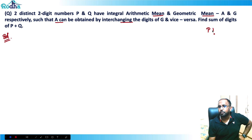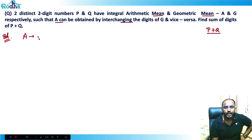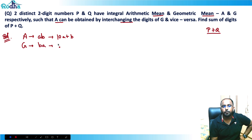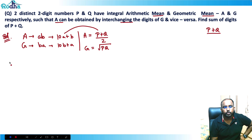Let's start with A, the arithmetic mean. Let's say A is the two-digit number represented as 'ab', so A equals 10a plus b. Since A and G are obtained by interchanging digits, G must be of the form 'ba', which equals 10b plus a. A is the arithmetic mean, so A equals (p plus q) divided by 2, and G is the geometric mean, so G equals the square root of pq.